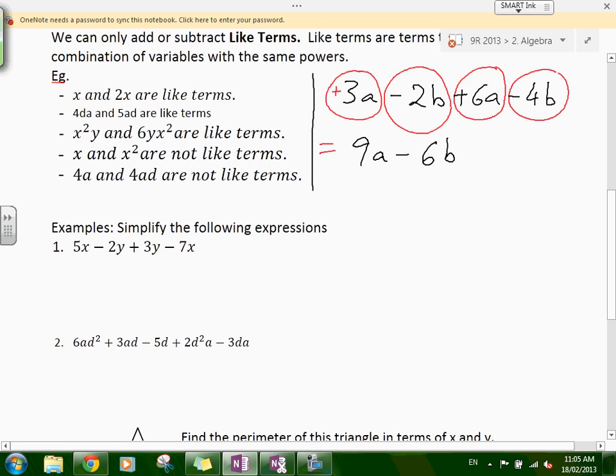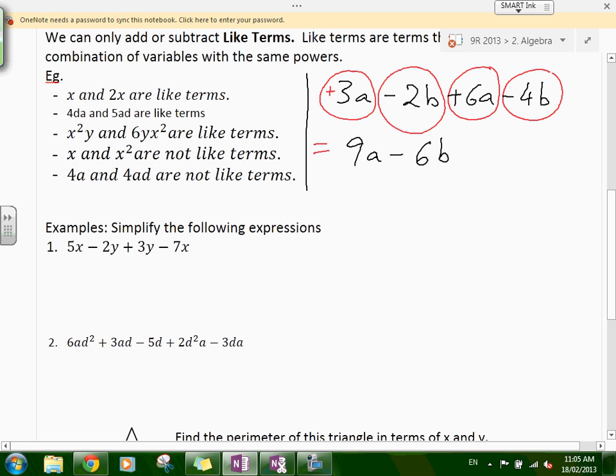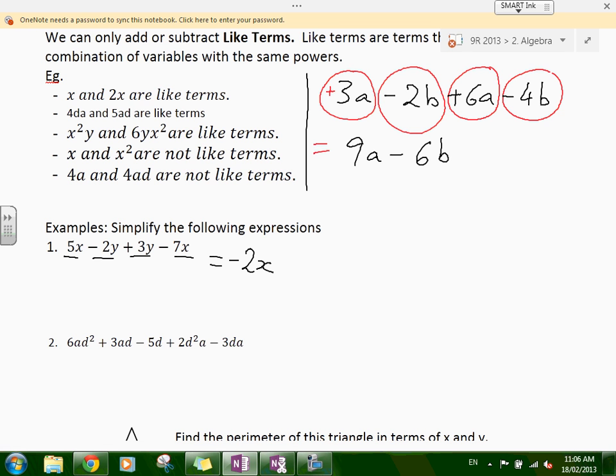Let's look at these examples. Simplify the following expressions: 5x minus 2y plus 3y minus 7x. 5x is a like term with 7x. 2y is a like term with 3y. How many lots of x do we have? We've got negative 2x. We've got 5x minus 7x, that's minus 2x. How many lots of y do we have? Minus 2y plus 3y. That's 1, it's just 1.